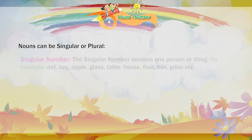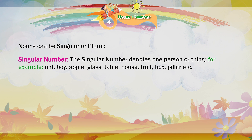Singular number. The singular number denotes one person or thing. For example: ant, boy, apple, glass, table, house, fruit, box, pillar, etc.